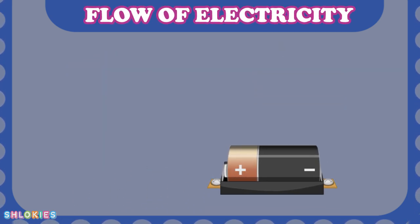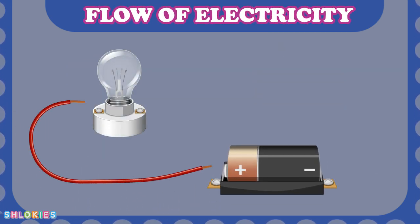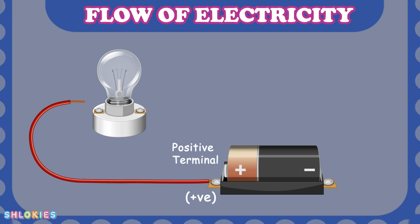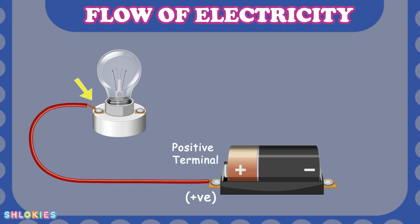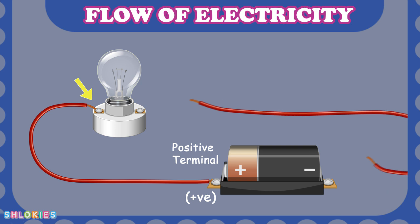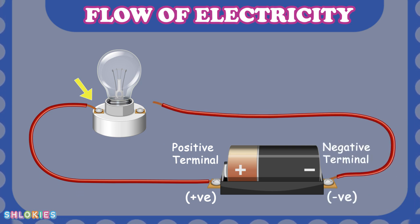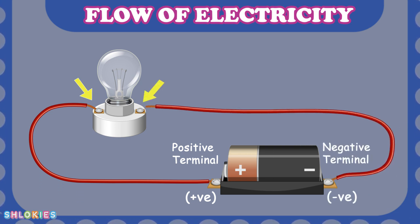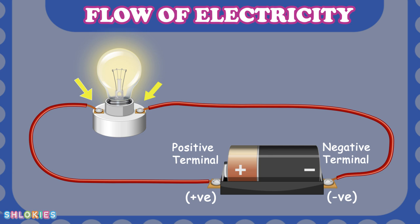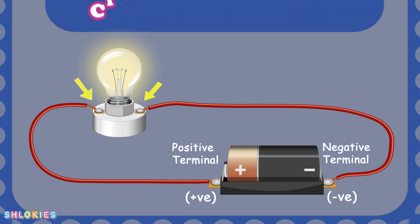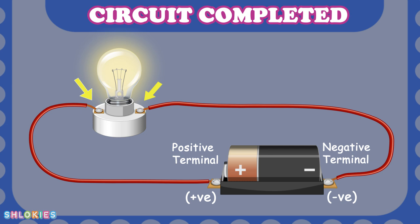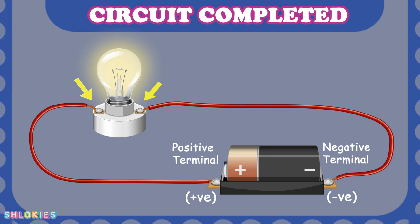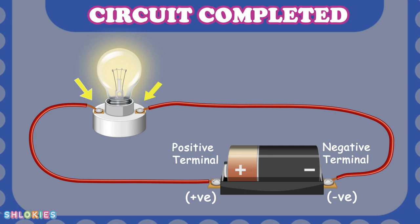We have to connect the positive terminal of the battery with one of the terminal of the bulb, and negative terminal of the battery with another terminal of the bulb. Here the circuit gets completed and the bulb gets glow. Energy flows through the circuit.